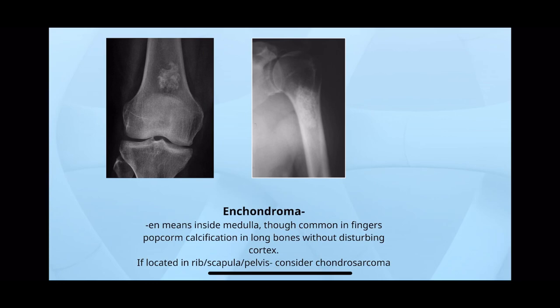This is a very simple diagnosis: you see popcorn calcifications — small calcifications like bony islands — inside the bone, not disturbing the cortices. If such a lesion is present in the ribs, scapula, or pelvis, think of chondrosarcoma, because enchondromas can get transformed into chondrosarcoma as well.